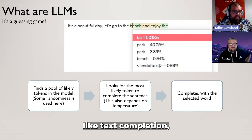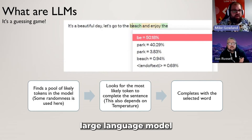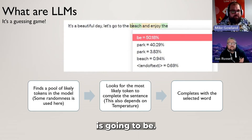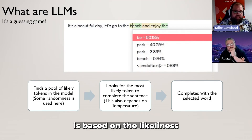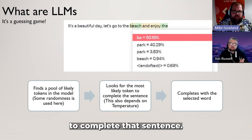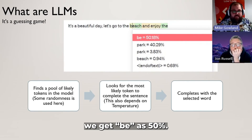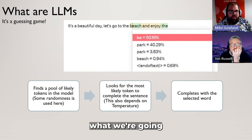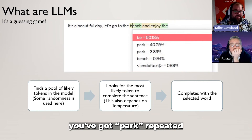So when we do things like text completion, we have a sentence like 'it's a beautiful day, let's go to the' — we start typing 'BE' and actually a completion large language model will start to suggest what the next token is going to be. You can see on that screenshot that we've got different percentages, and that percentage is based on the likeliness that token would follow to complete that sentence. So 'BE' is at 50%, most likely going to be what we use next, but we could also have 'PARC' — and in that instance, you've got 'PARC' repeated.